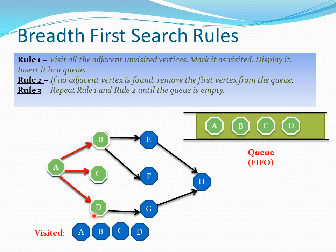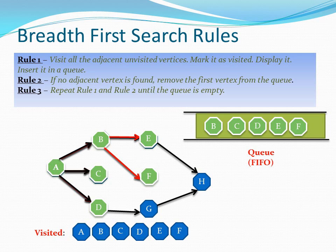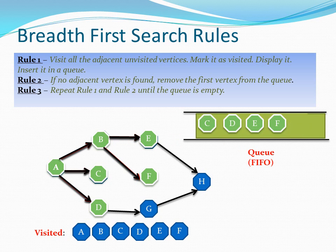A doesn't have any other adjacent vertices to visit. As per rule two, if no adjacent vertex is found, remove the first vertex from the queue. So let us remove A from the queue. Next in our queue we have B, so let us start from that. B has two adjacent vertices, so as per rule one we visit them one by one. We see D, insert it in the queue, and the next vertex is F, so let us visit that as well.